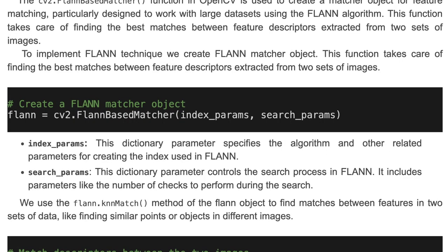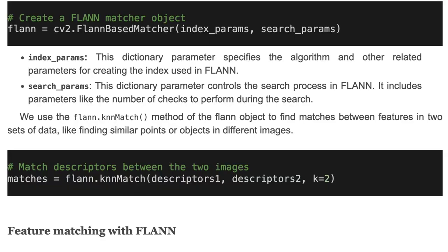Index params is a dictionary that specifies the algorithm and other related parameters for creating the index used in FLANN search. Search params is a dictionary that controls the search process in FLANN; it includes parameters like the number of checks to perform during the search. We use the KNN match method of the FLANN object to find matches between two features in two sets of data, like finding similar points or objects in different images.